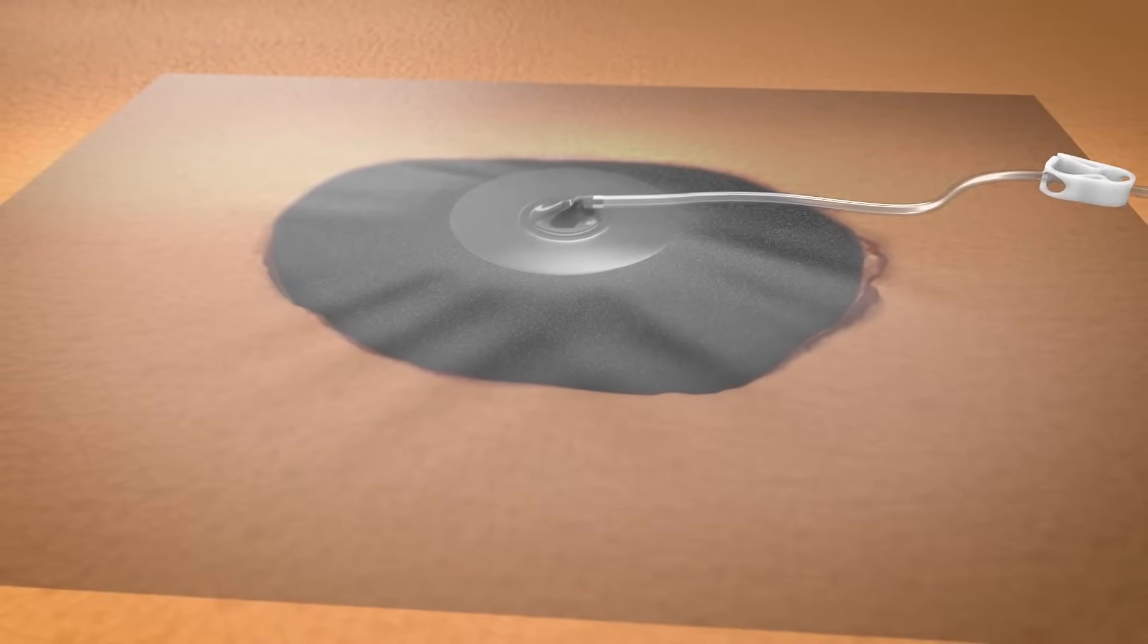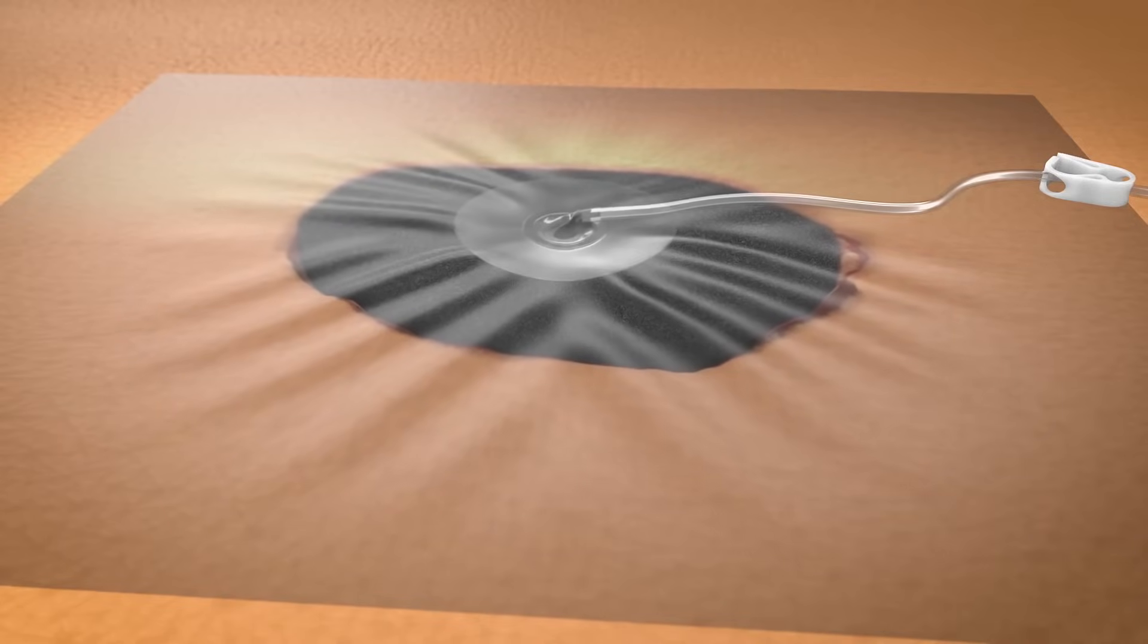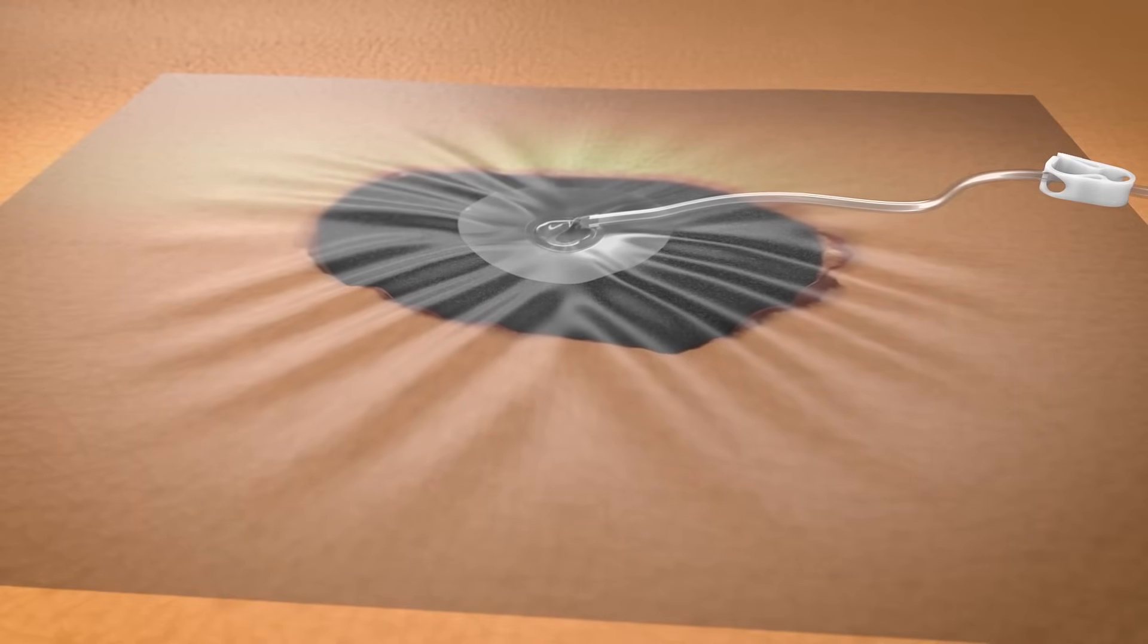3M sensor track technology helps provide uniform negative pressure to the wound surface. It also provides alarms when there are conditions that would impact negative pressure wound therapy.